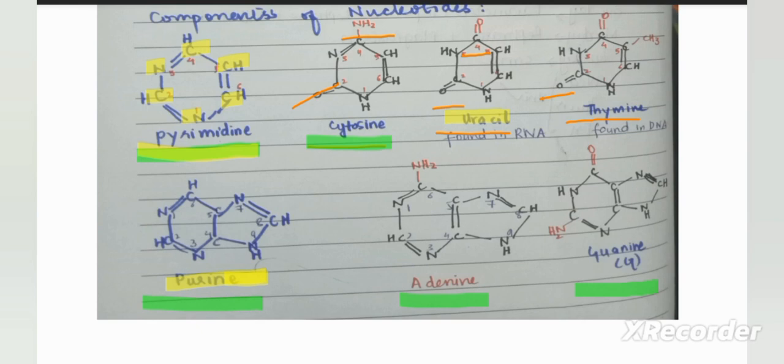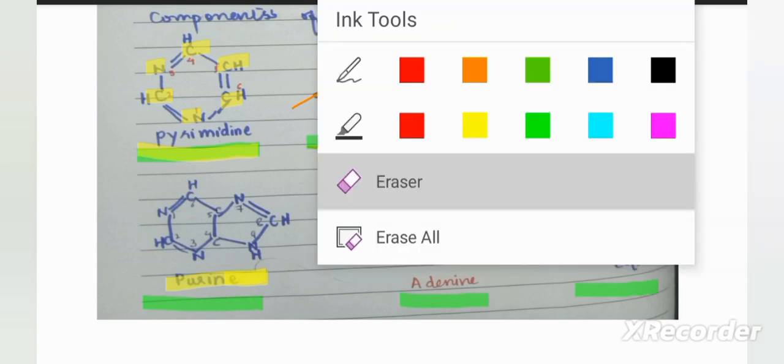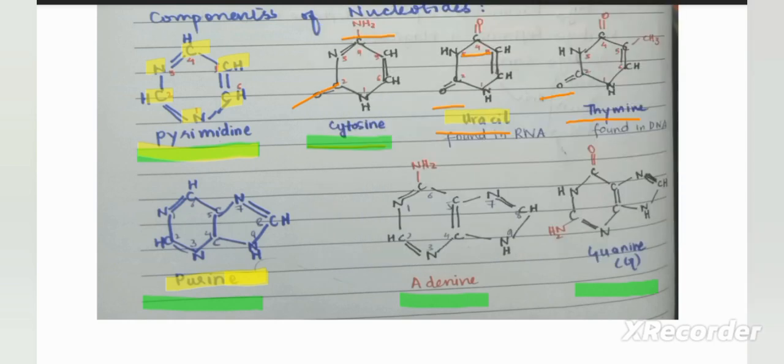Purines are two-ring structures. In adenine, an NH2 group is present at carbon 6. But in guanine, a carbonyl group is present at carbon number 6. This is the difference between adenine and guanine. Both are purines and both are found in DNA as well as RNA. Adenine has an NH2 group and guanine has a C=O group at carbon 6.